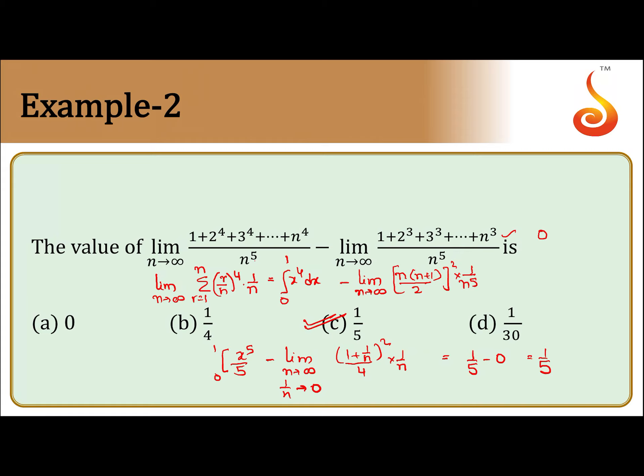So this is integration limit as sum. This is the normal limit. You must be able to identify it must be in a form of summation r equal to 1 to n, r by n to the power 4, 1 by n. 1 by n behaves like a dx and r by n behaves like x, and limits are from 0 to 1.